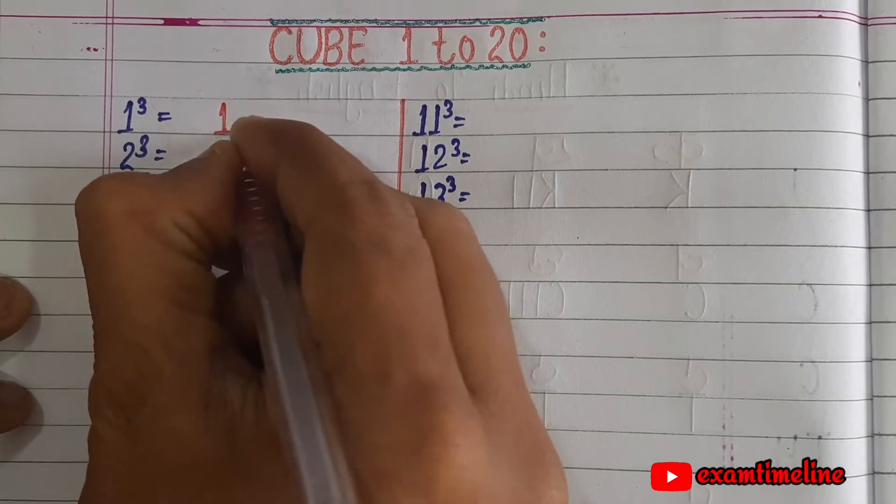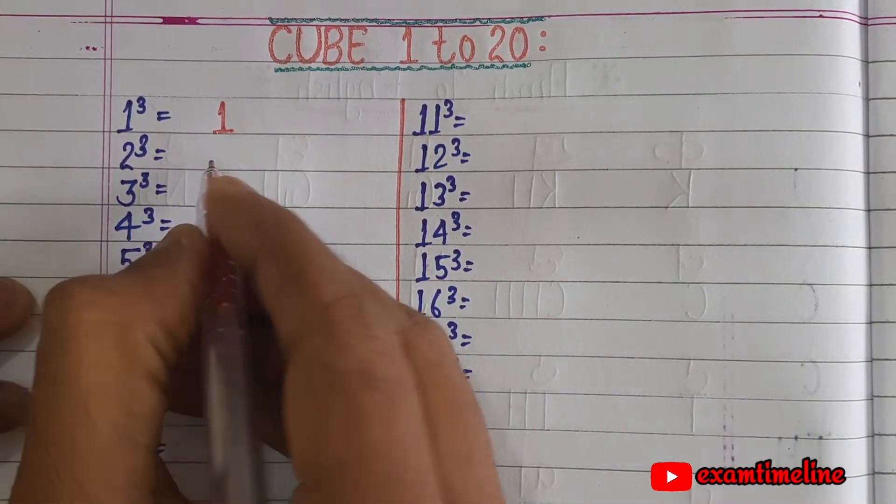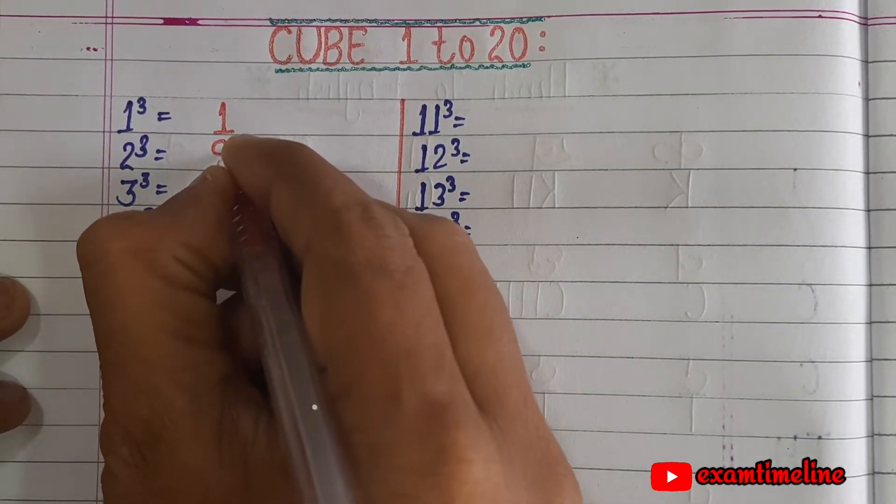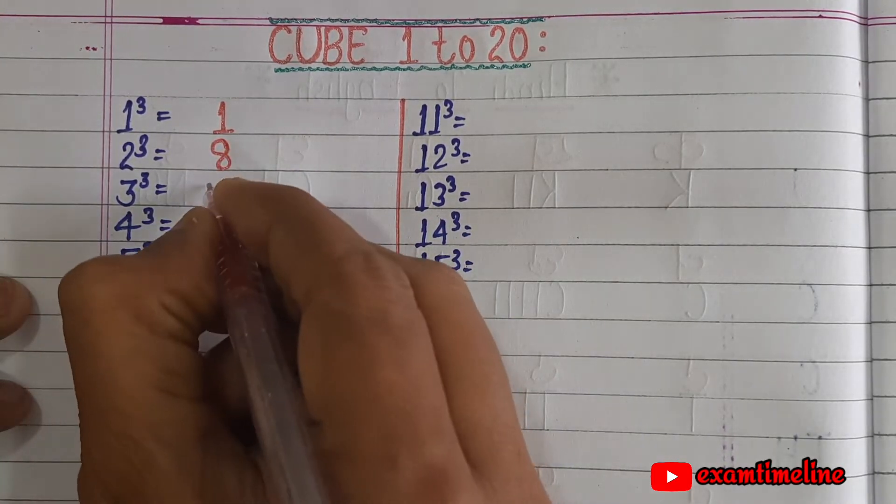1 cube equals 1, 2 cube equals 8, 3 cube equals 27.